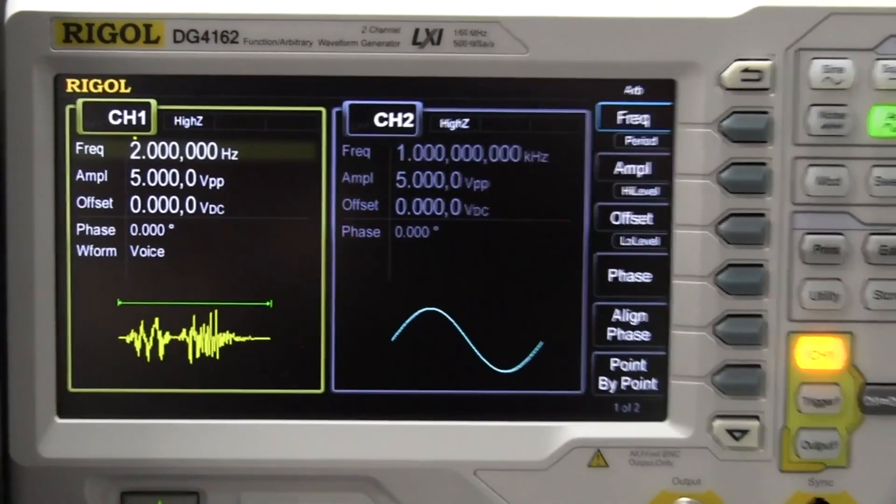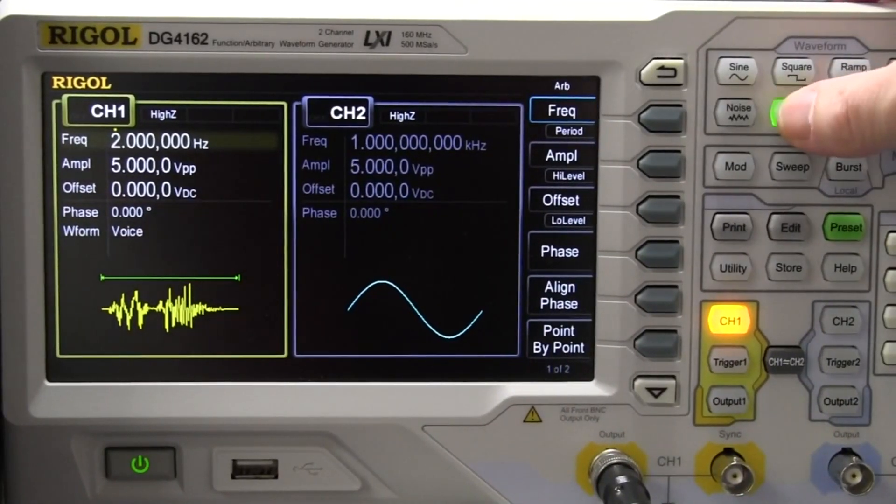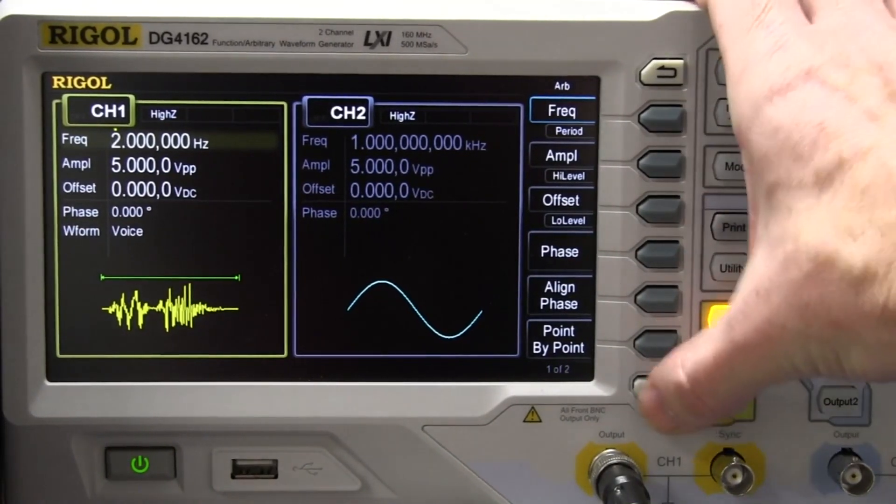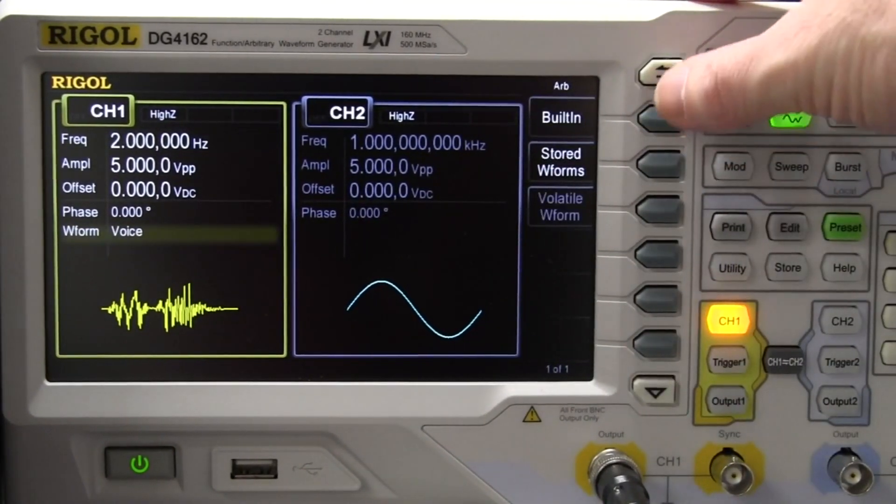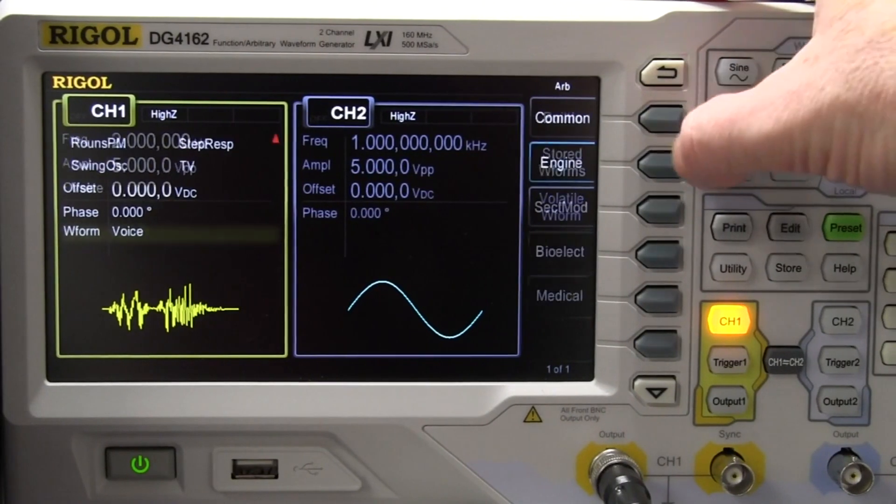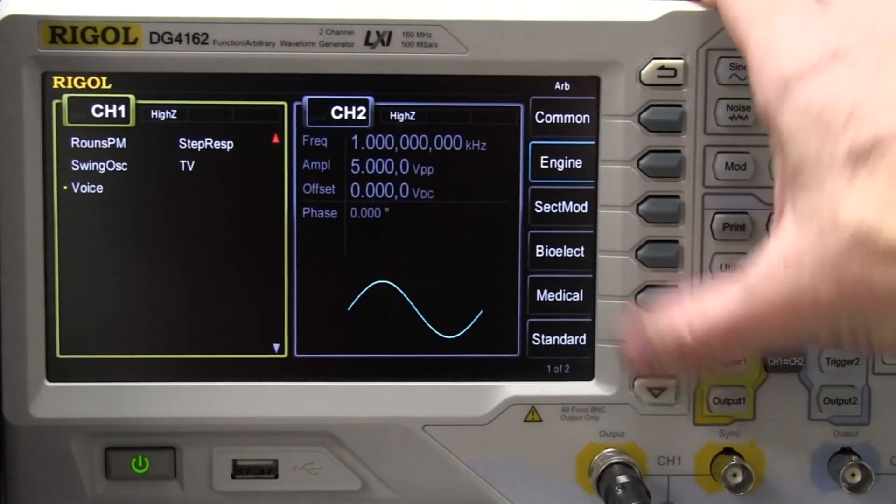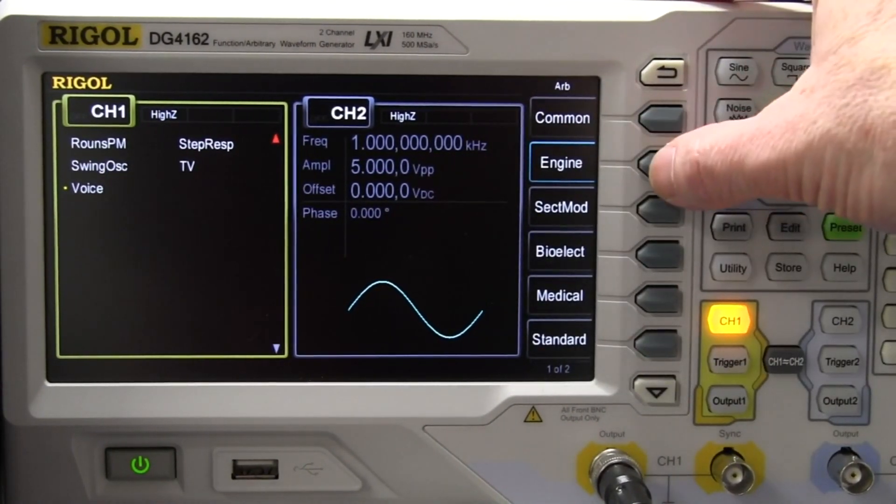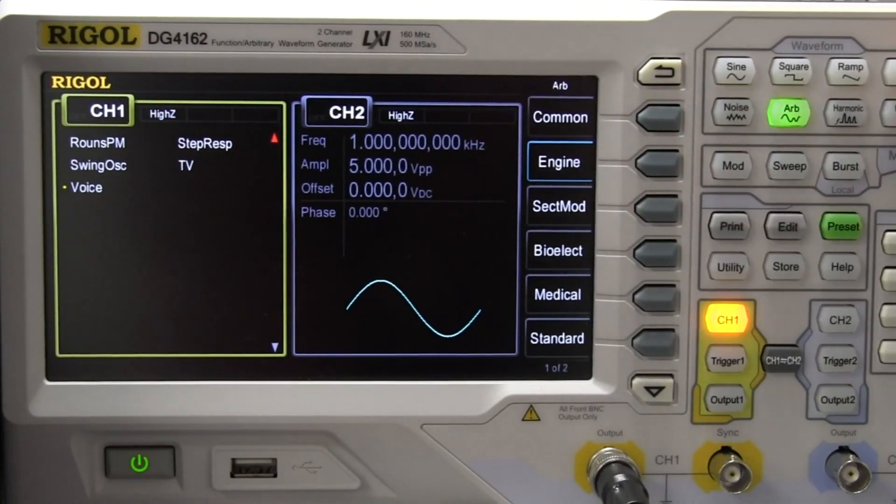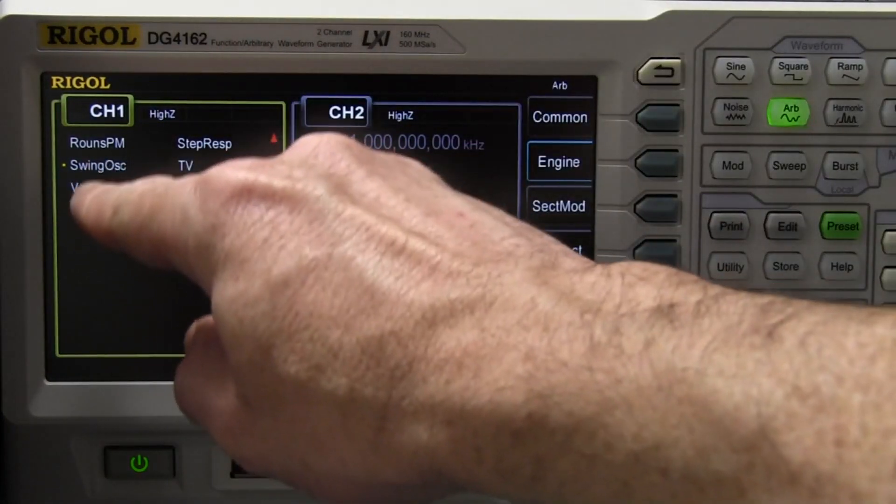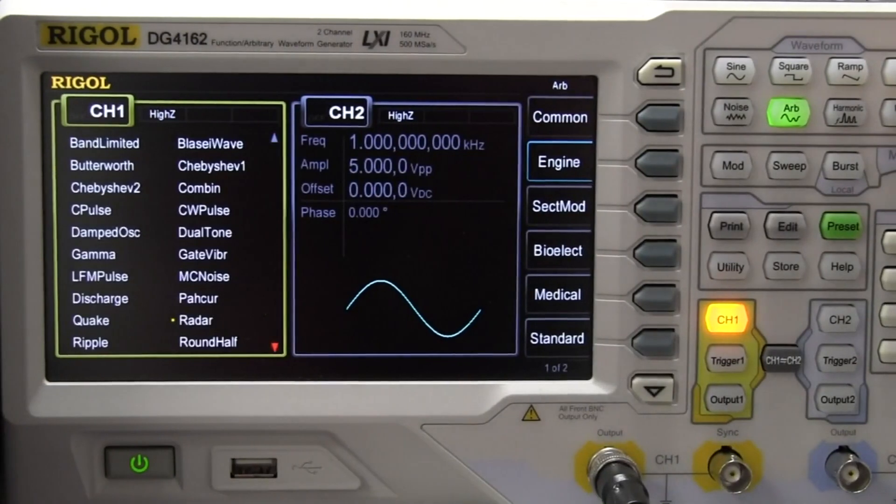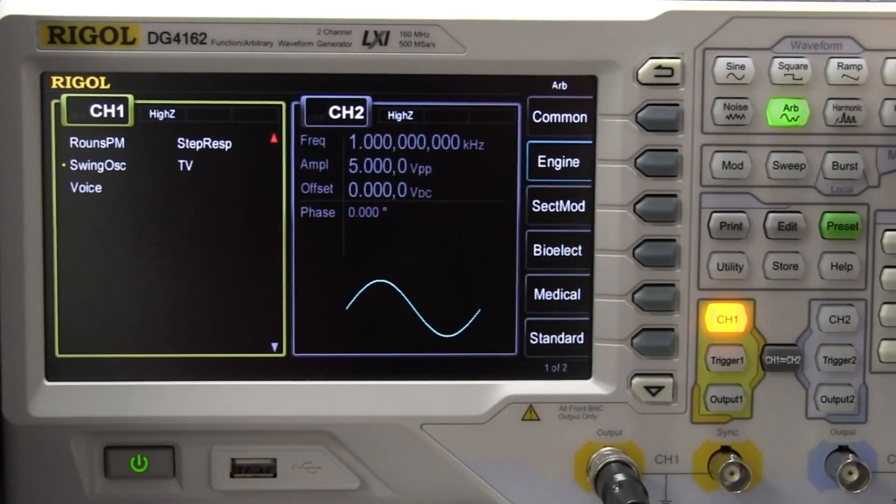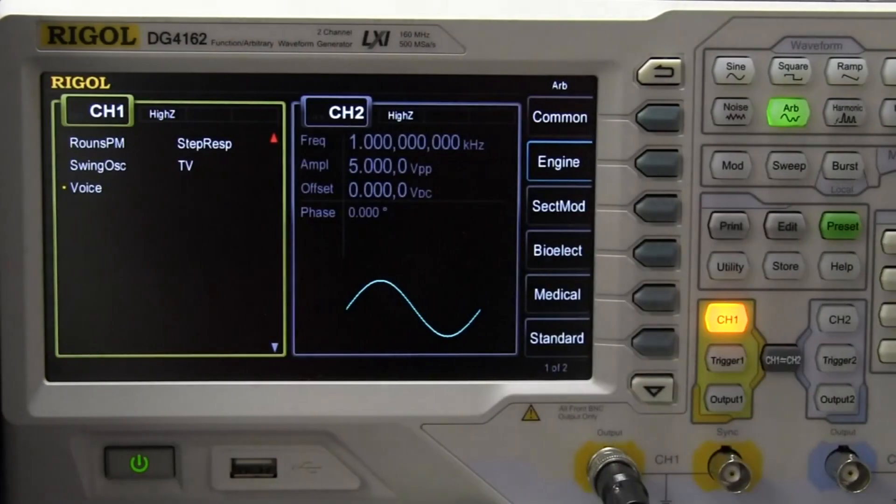Alright, if you didn't know, in the ARB capability here, if you go into ARB and then you go into select waveform, it's one of the built-in waveforms. So, built-in, there's a whole bunch of them, but it's in the engine one, go figure. It's one of these ones over here, and you can see the little dot.